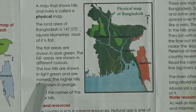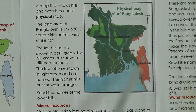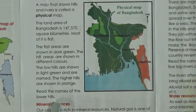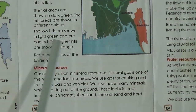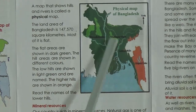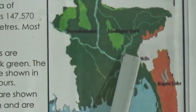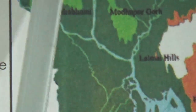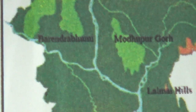The higher hills are shown in orange. The lower hills are shown in light green. Look here — these are our lower hills: this is Barindra Kumi and this is Modhupur Gar. These are our lower hills.